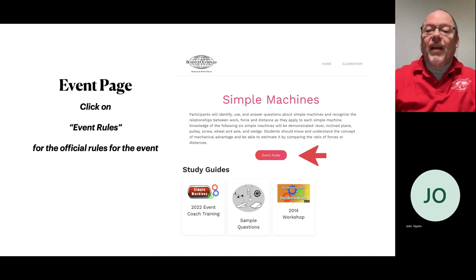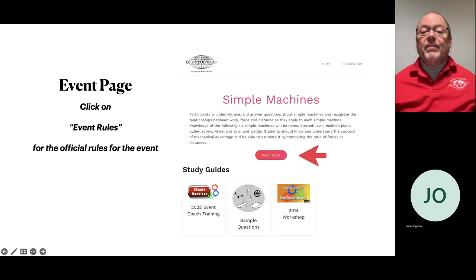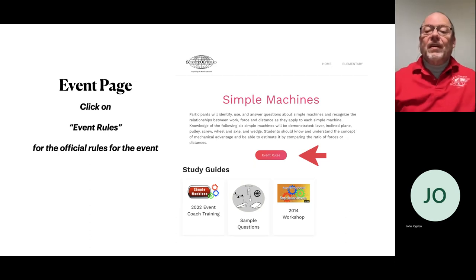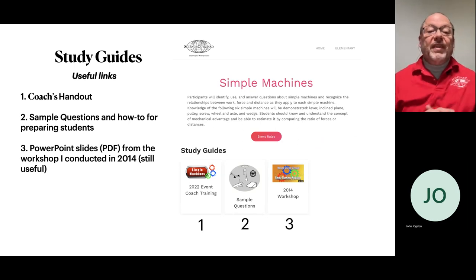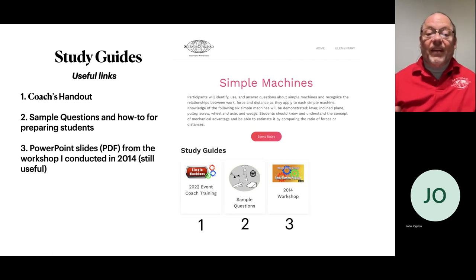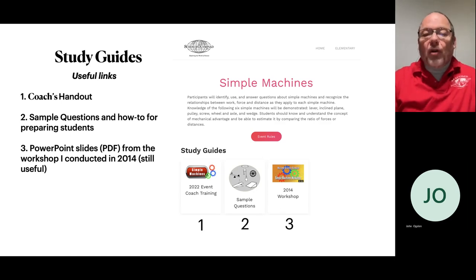That will take you to our event page. There is an icon right there under the description that gives you the event rules — these are the official rules for the event. Below that are three icons I want to talk about. The first, number one, is the coaches handout. It says 2022 but it's the same handout from last year; nothing has changed. This is where I lay out exactly how the event is going to work.